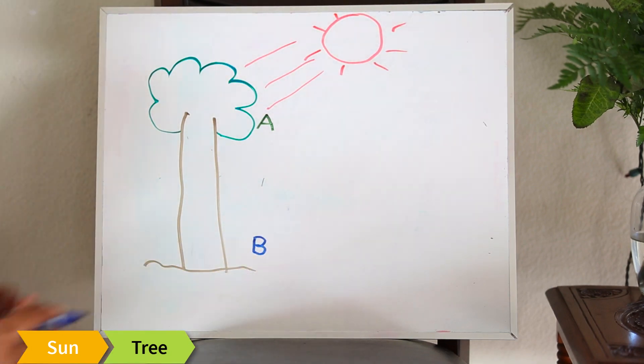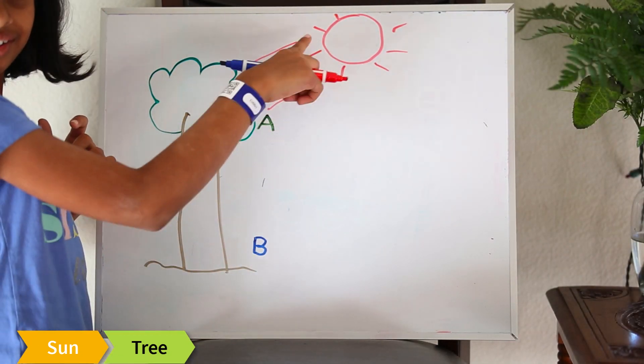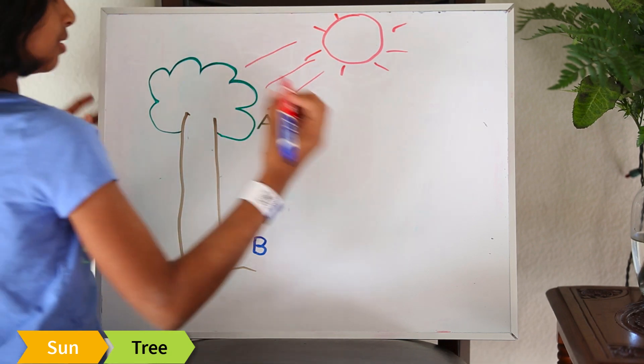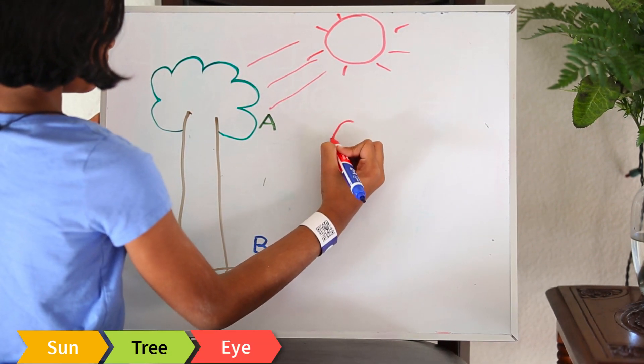The light bounces off point A and point B into our eye, like this.